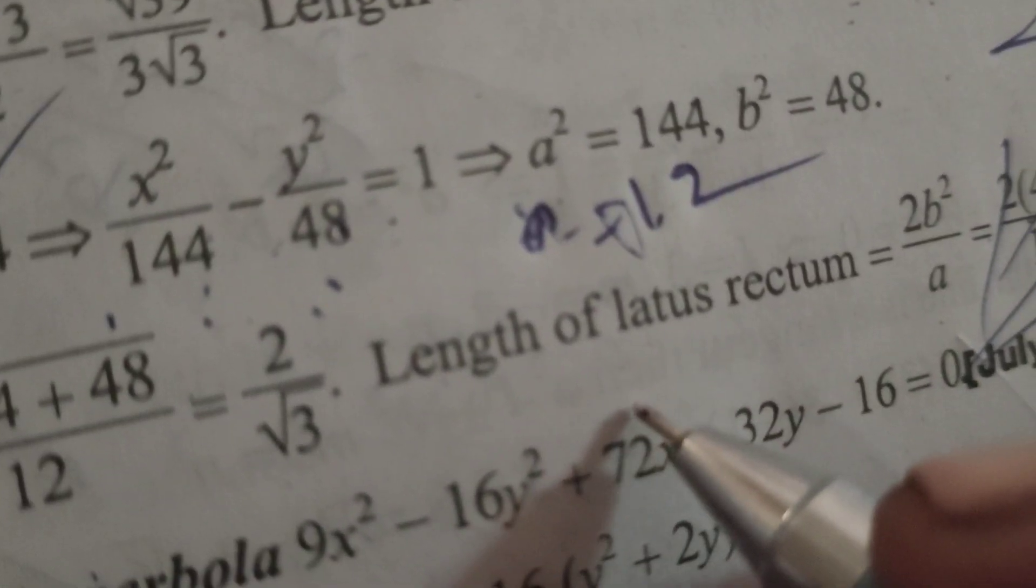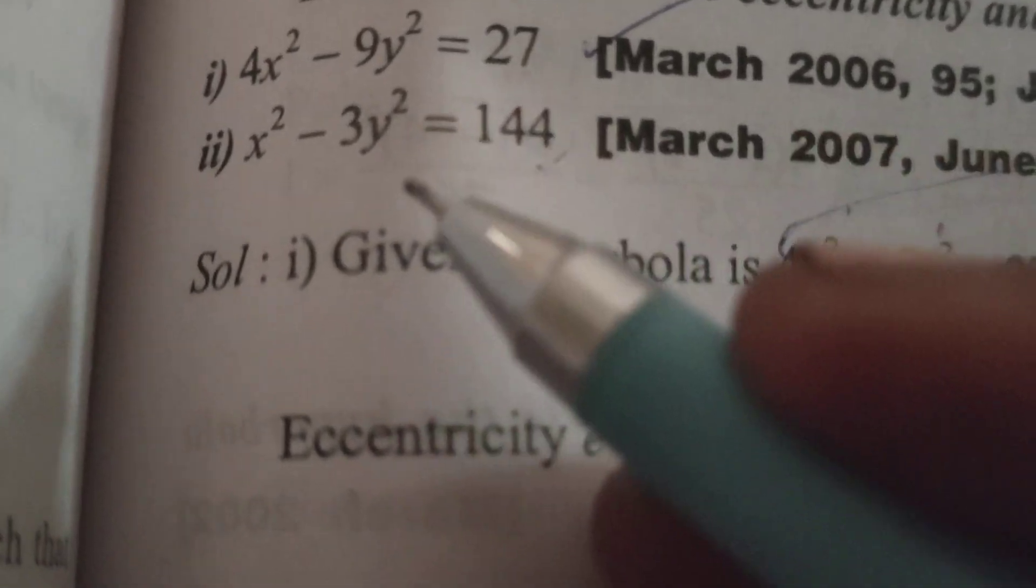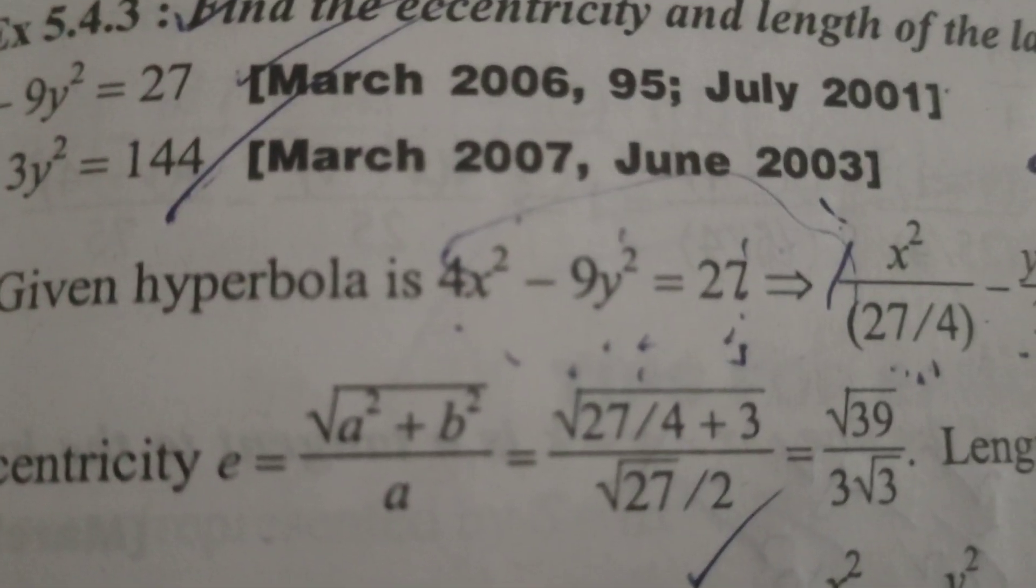So 8 is the length of the latus rectum of the given hyperbola equation x² - 3y² = 144. Thank you.